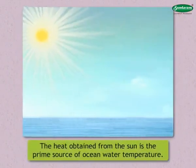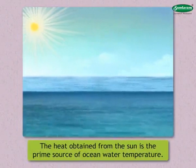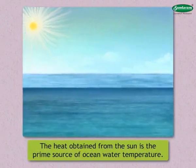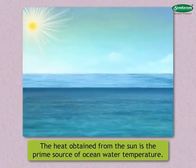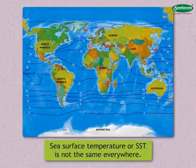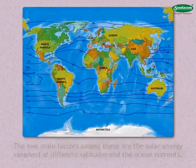The heat obtained from the sun is the prime source of ocean water temperature. The temperature of the ocean water surface, popularly known as sea surface temperature or SST, is not the same everywhere. A number of factors are responsible for this.